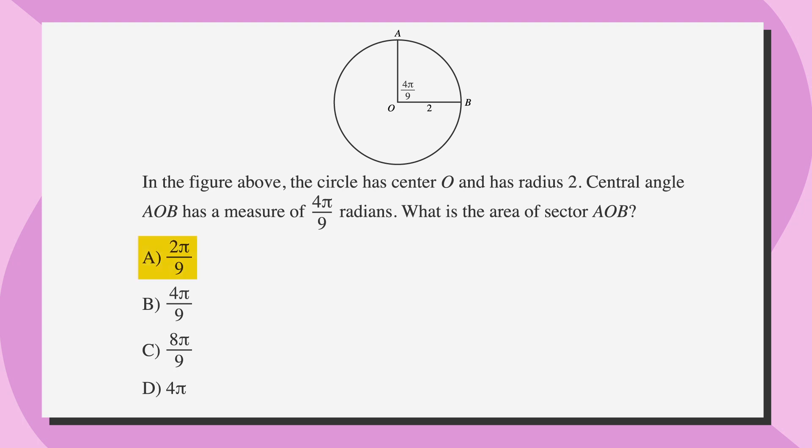The answer choices are a, 2 pi over 9, b, 4 pi over 9, c, 8 pi over 9, and d, 4 pi. As always, we'll start by underlining the facts, circling the key words, and labeling the answer choices.